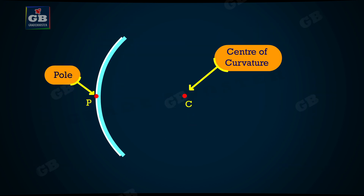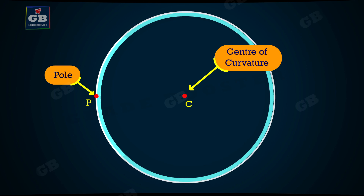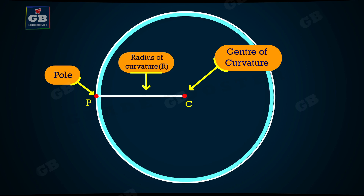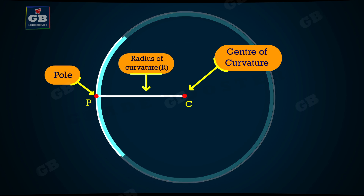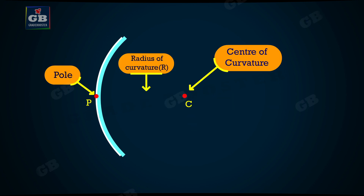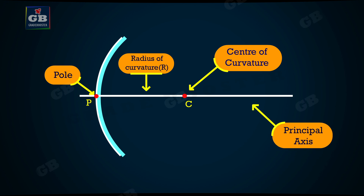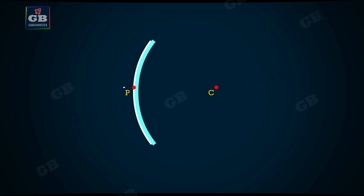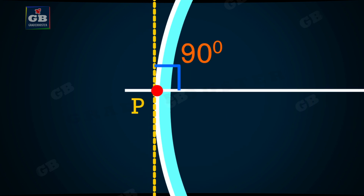Radius of curvature. The radius of the sphere of which the reflecting surface of a spherical mirror forms a part is called the radius of curvature of the mirror. It is represented by the letter R. Principal axis: an imaginary straight line passing through the pole and the center of curvature of a spherical mirror is called the principal axis. We should remember that the principal axis is normal to the mirror at its pole, meaning the angle between the mirror and principal axis at the pole is 90 degrees.